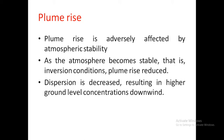Flume rise is unfavorably affected by atmospheric stability. Atmospheric stability means whether the atmosphere is stable or unstable. When atmospheric stability becomes stable — that is inversion condition — flume rise is reduced, dispersion is decreased, and the result is higher ground-level concentration downwind.